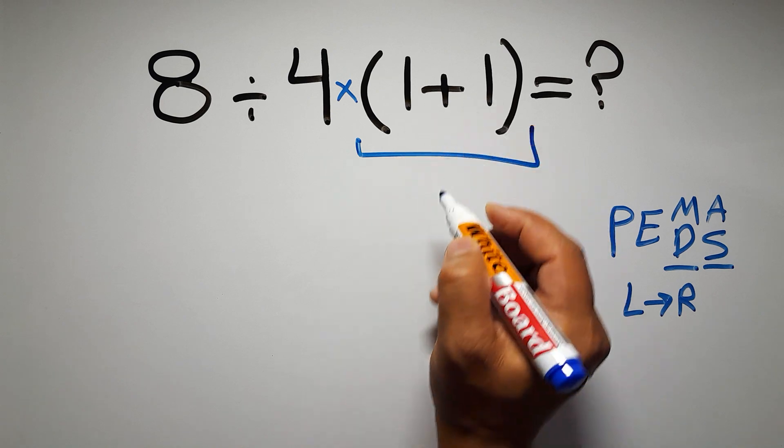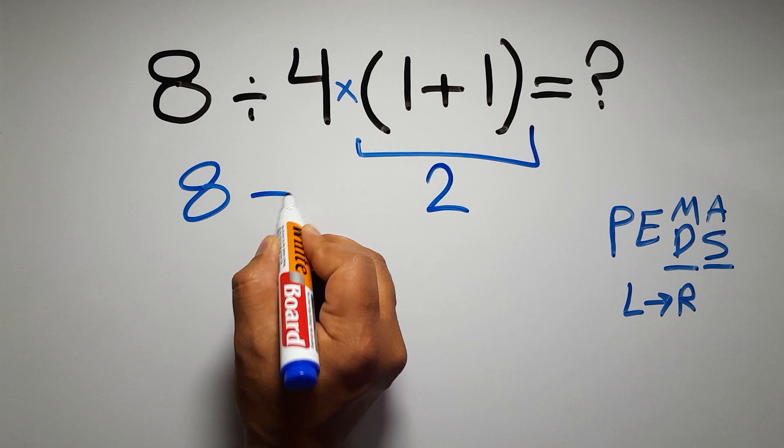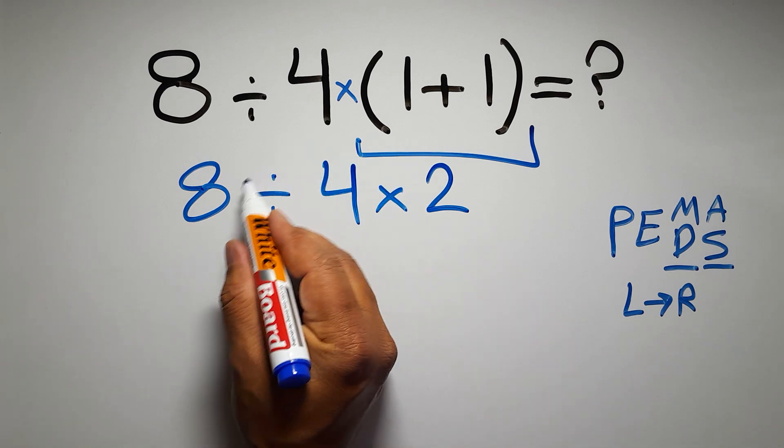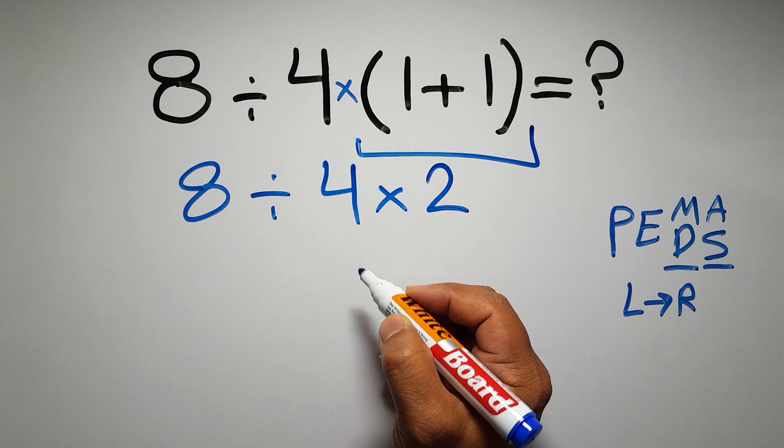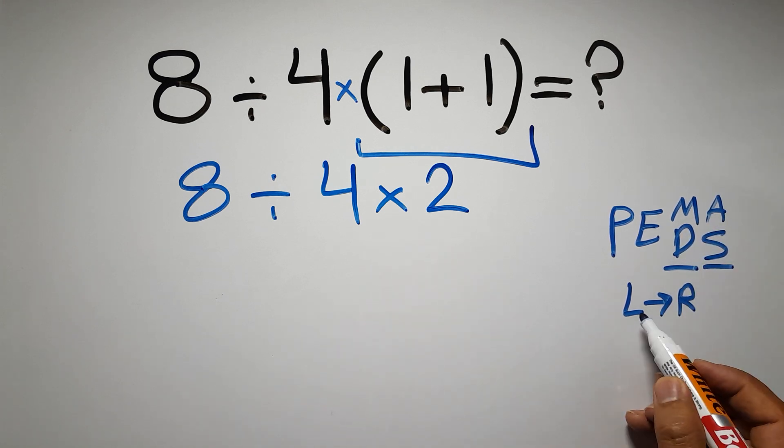Inside this parentheses we have 1 plus 1 which equals 2, so 8 divided by 4 times 2. Now we have one division and one multiplication. As I said, multiplication and division have equal priority and we have to work from left to right.